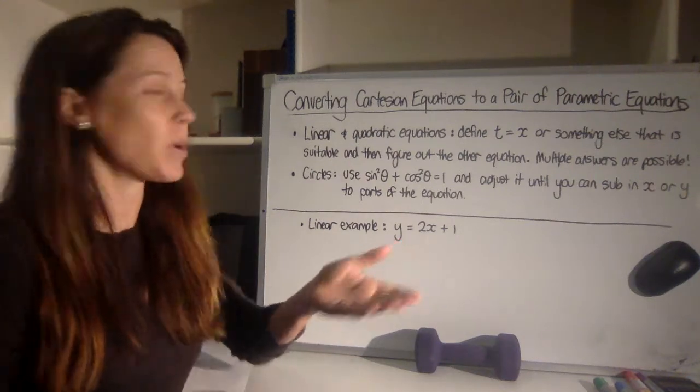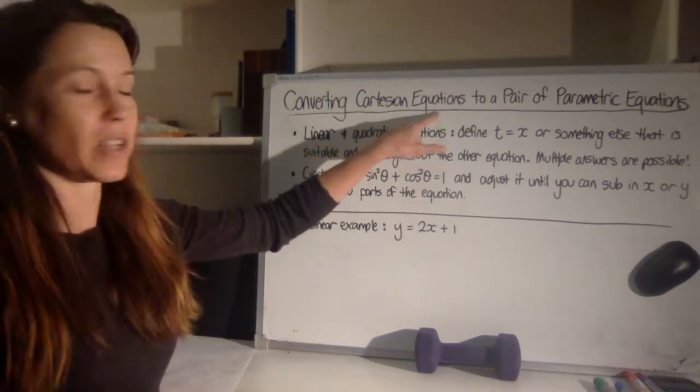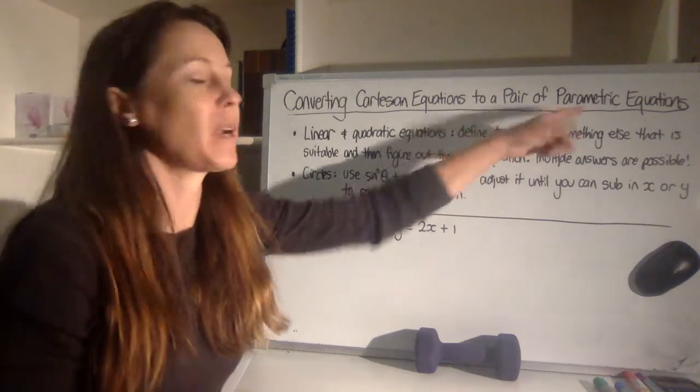Now we need to know how to go back the other way and convert Cartesian equations into a pair of parametric equations.